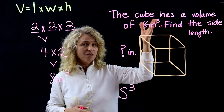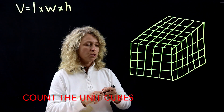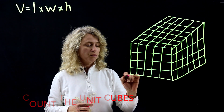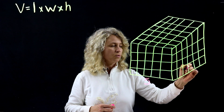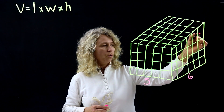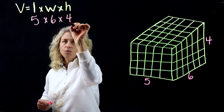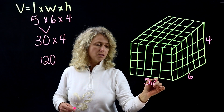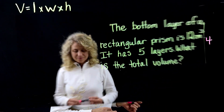Here's a rectangular prism shown in cubic units. Count the dimensions: length is 1, 2, 3, 4, 5 — so 5 units. Width is 1, 2, 3, 4, 5, 6 — so 6 units. Height counted here is 1, 2, 3, 4 — so 4 units. Fill in the values: 5 times 6 is 30, and 30 times 4 is 120. If the unit is inches, the volume is 120 inches cubed.